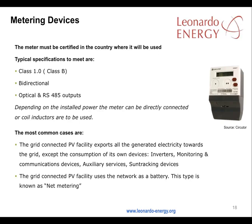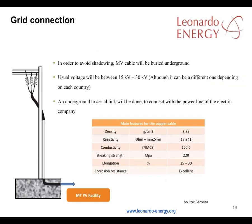Or a net metering setup where a grid-connected PV facility uses the grid as its battery. For grid connection, in order to avoid shadowing, medium voltage cables should be buried underground rather than carried above the modules. 15kV to 30kV cabling is commonly used, although that can vary in different countries.